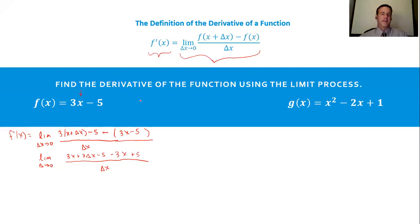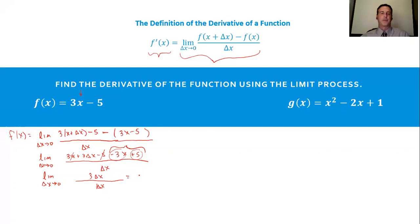I can tell students that we did this right if the items in the back, with their respective terms, cancel with items before that. The add 5 will go away with the subtract 5, and the subtract 3x will disappear with a positive 3x. So the limit as delta x goes to 0, all I have left on top is a 3 delta x over a delta x, and that leaves me with a 3.